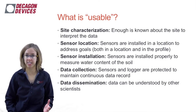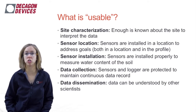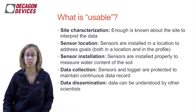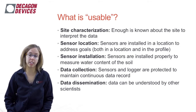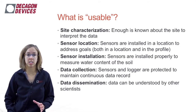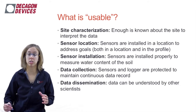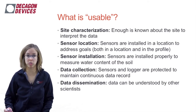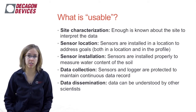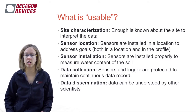We need to know a little bit about the site in order to understand what the data mean. The sensors need to be installed in a location that addresses the goals of either a study or a research need — or even if it's just scheduled irrigation, they need to be in a location that allows you to do that. The installation itself has to be really good. Data collection has to be done in a way that allows you to access the data when you need it and collect it temporally in the field.